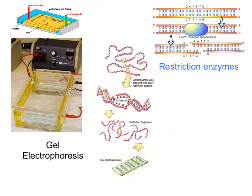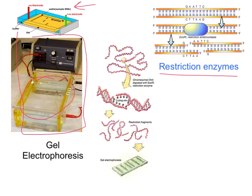Our next technique is gel electrophoresis. This uses specific equipment where the gel goes in and we load it with little pieces of DNA. There are little holes, or wells, in the gel, and we put tiny samples of DNA into these wells. We get these little samples of DNA by using restriction enzymes. Restriction enzymes look for a particular DNA sequence, and when they find it they cut the DNA — every single time they see that pattern. This ends up cutting the DNA in multiple spots, producing what are called restriction fragments.